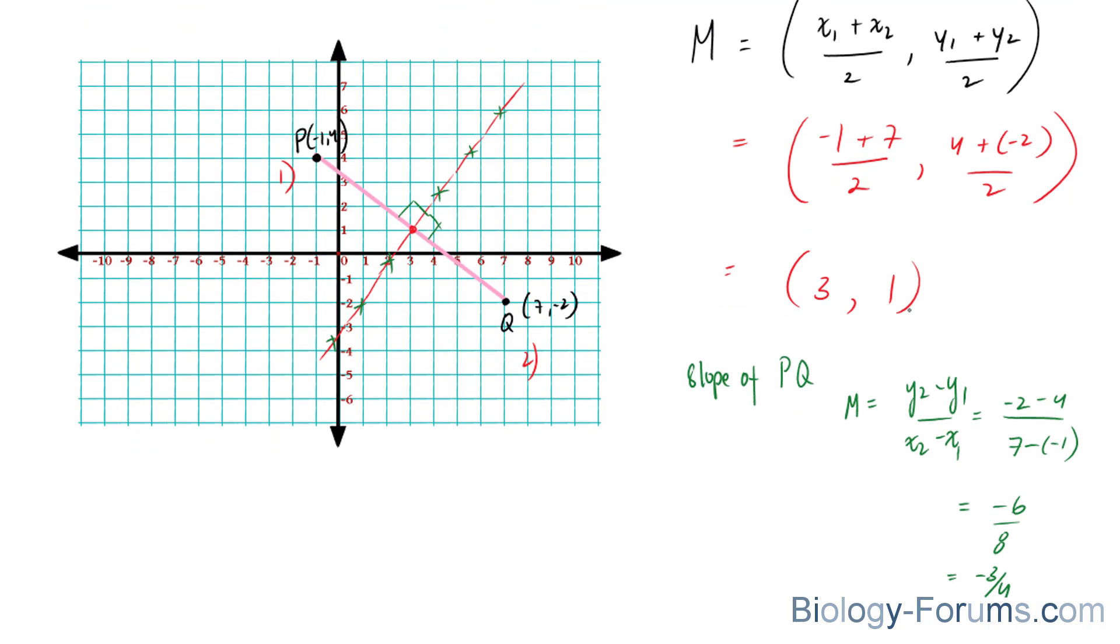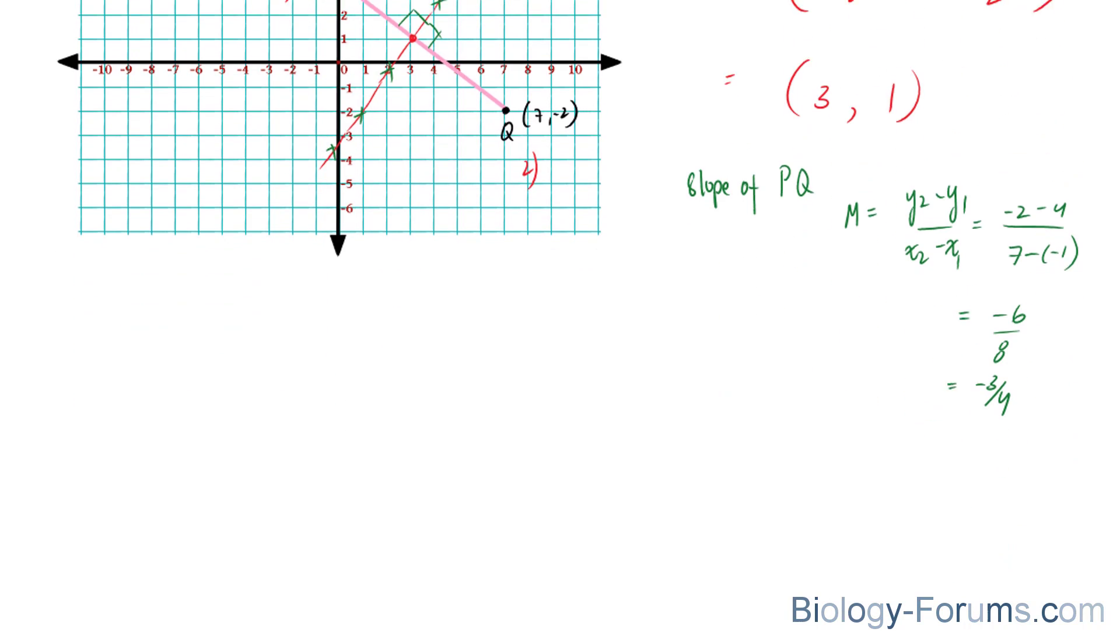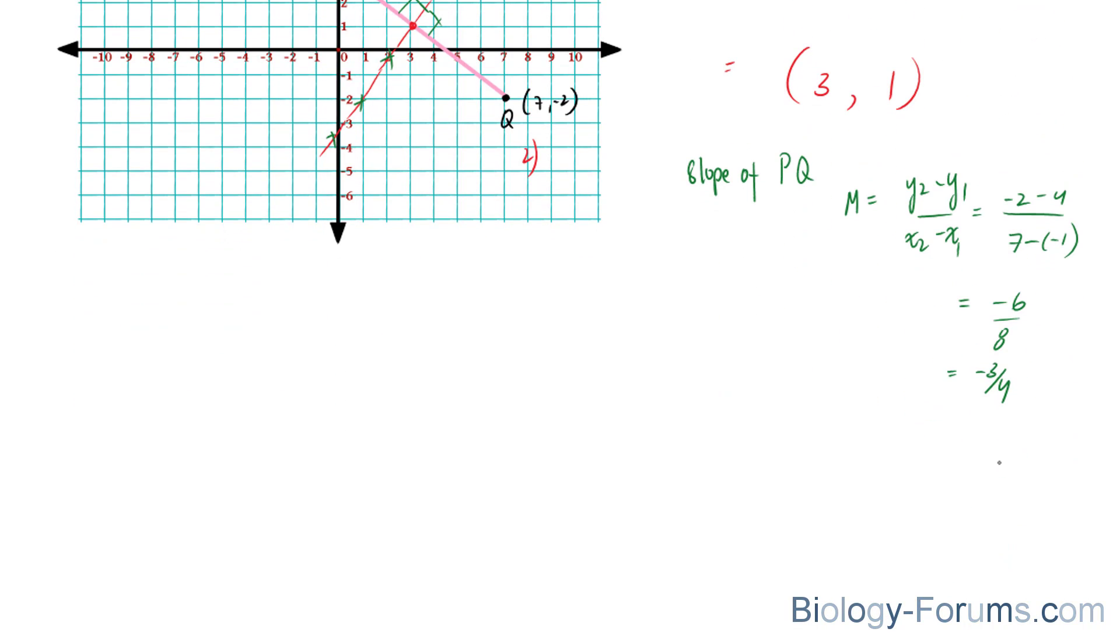So to find the slope of this red line, you must take the negative reciprocal of negative 3 over 4. The reciprocal means that this needs to be flipped, so this number goes up, and that number goes down, and also, since it's the negative reciprocal, you take the negative of that. So since it's negative now, it becomes positive. So the slope of the red line will be 4 over 3.